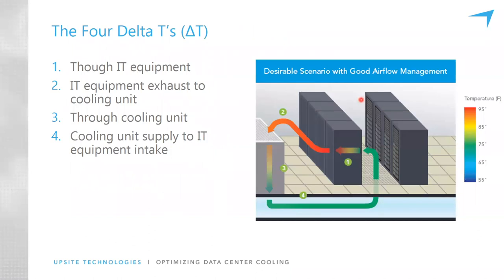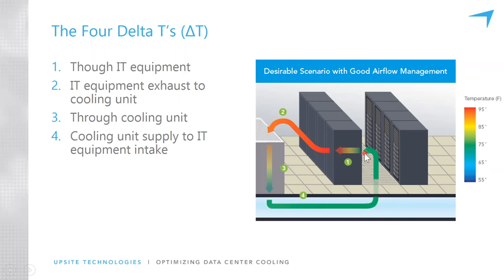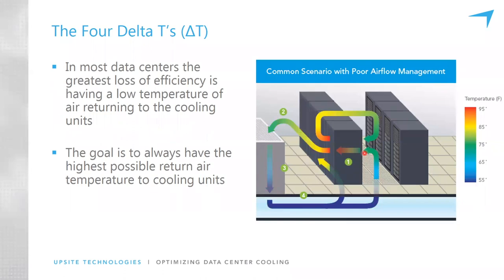I want to share one more concept: the four delta Ts. Most people are aware of two of the delta Ts in a computer room — labeled as one and three on this image. We all know that air warms up as it flows through IT equipment and cools down as it flows through cooling units. There are two more delta Ts that are very important to measure, labeled as two and four, and they can provide insight into the potential for optimizing conditions in the room. This image shows an ideal scenario where we're not seeing much temperature change for delta T two and four, but in typical conditions we're seeing a lot of change.